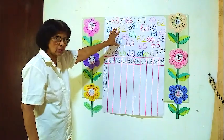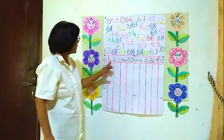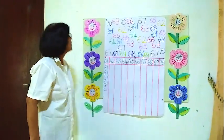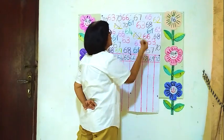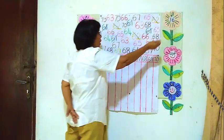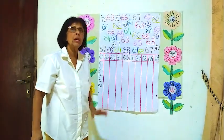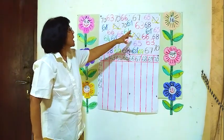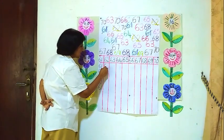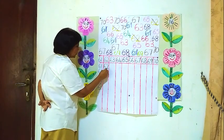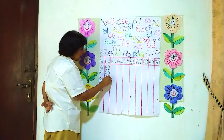We will sort out those 61's and put them into the correct column. Now we will see how many 62's are here. There's 1 here, another 62 here, another 62 here. Counting: 1, 2, 3 — there are 3 62's. We will put them into the 62 column: 1, 2, 3 — 3 62's.